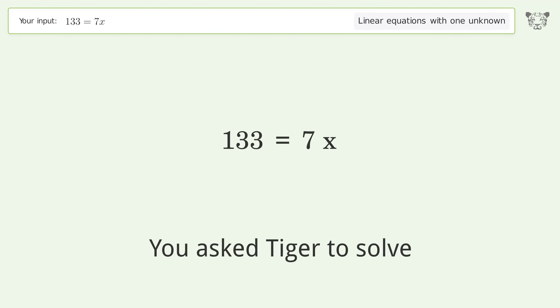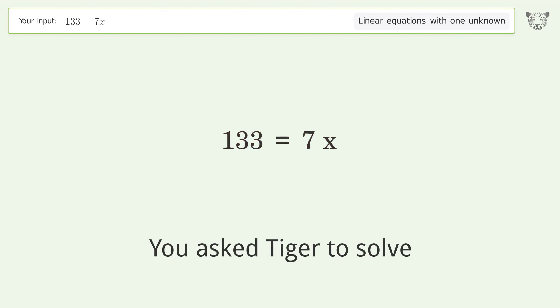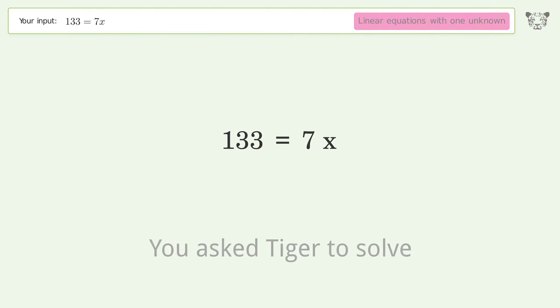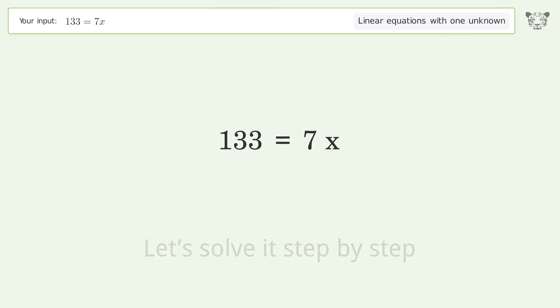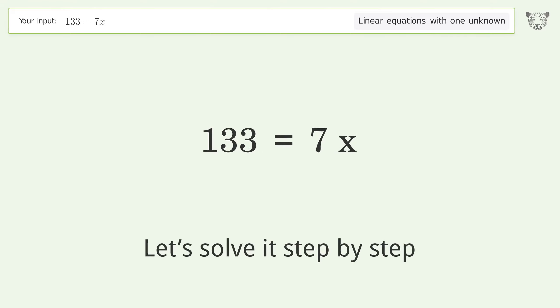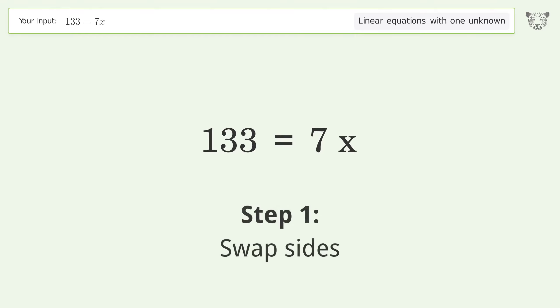You asked Tiger to solve this — it deals with linear equations with one unknown. The final result is x equals 19. Let's solve it step by step. Swap sides.